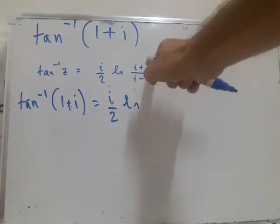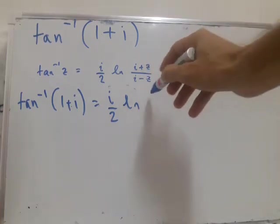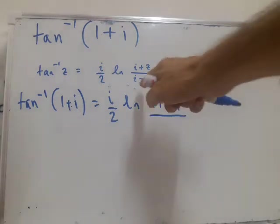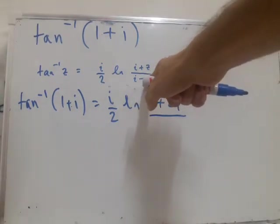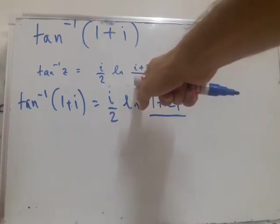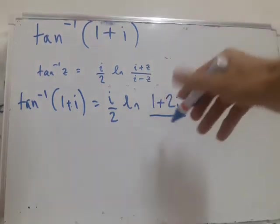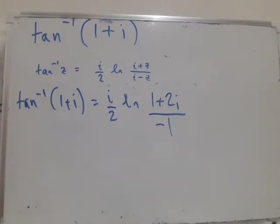So 1 plus i plus i is 1 plus 2i, and we've got i minus z, so that's i minus 1 minus i. So we just got minus 1 on the bottom, makes life slightly easier.